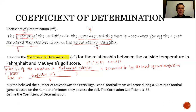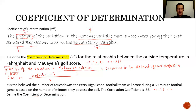Last question. It is believed that the number of touchdowns that the Perry High School football team will score during a 60-minute football game is based on the number of minutes they possess the ball. The correlation coefficient is 0.83. To find the coefficient of determination, I need R squared — so I square 0.83 in my calculator — and that gives me 68.89%, or 0.6889.